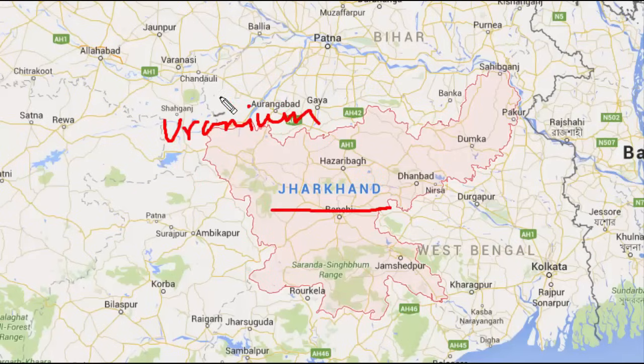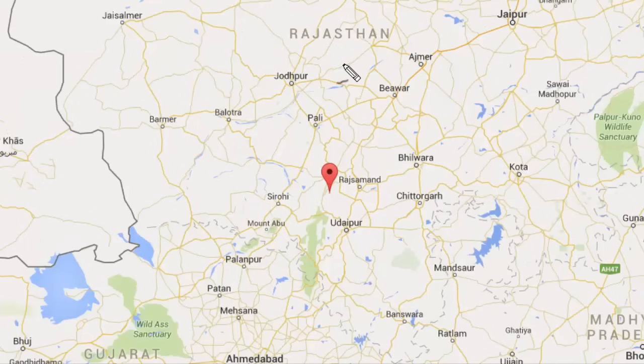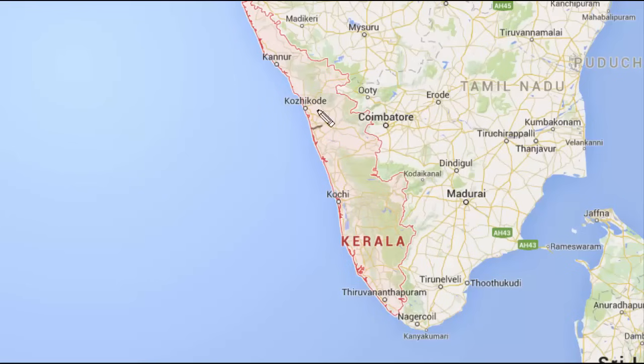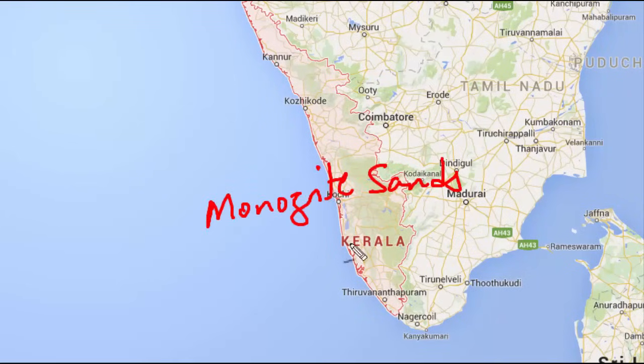Uranium and thorium, which are available in Jharkhand and the Aravalli ranges of Rajasthan, are used for generating atomic or nuclear power. The monazite sands of Kerala is also rich in thorium.